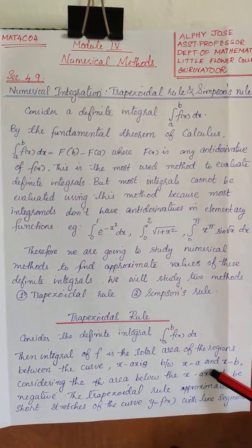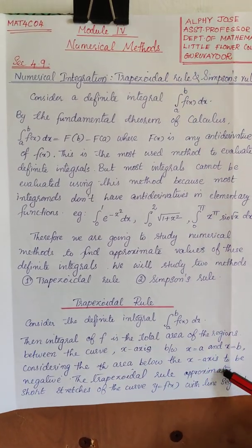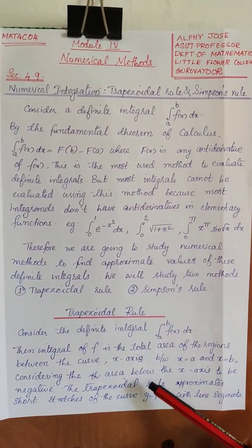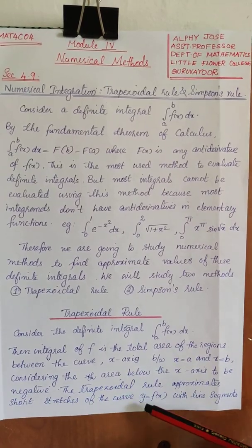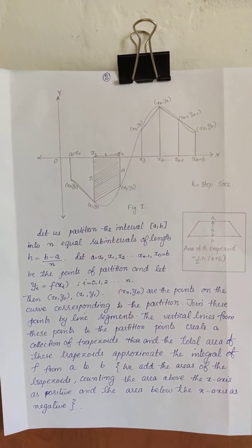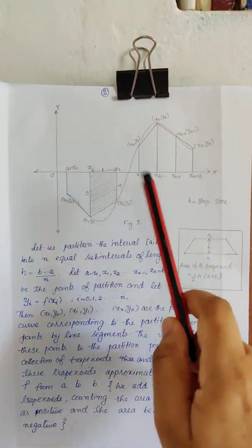Between x is equal to a and x is equal to b, considering the area below the x-axis to be negative. The trapezoidal rule approximates short stretches of the curve y equal to f of x with line segments. This is similar to Riemann integration and Riemann sums.